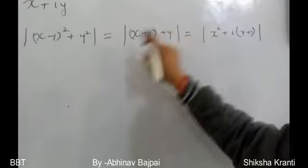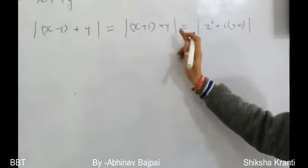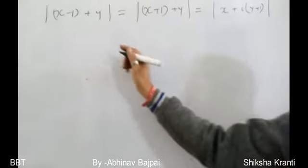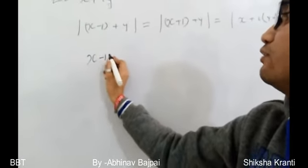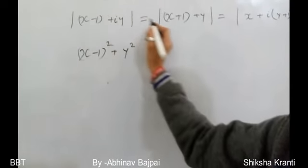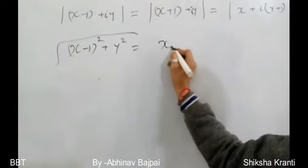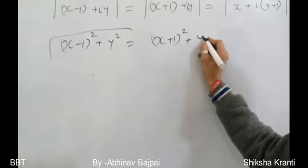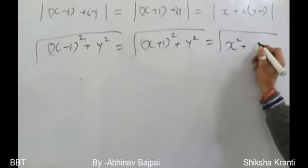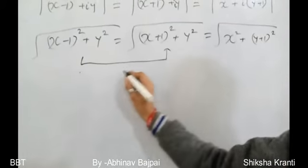Applying the formula for the modulus of a complex number, we write: sqrt((x-1)² + y²) = sqrt((x+1)² + y²) = sqrt(x² + (y+1)²). We label the first equality as equation 1 and the second as equation 2, since we have two variables x and y.